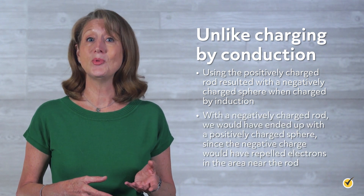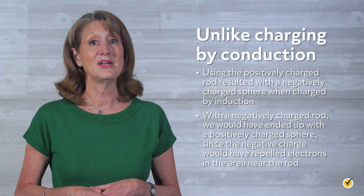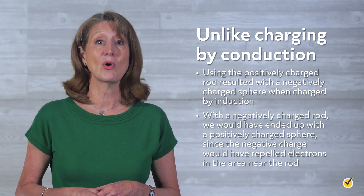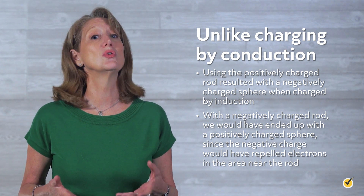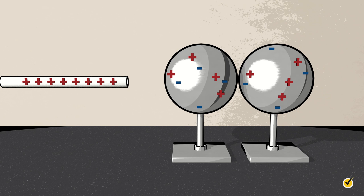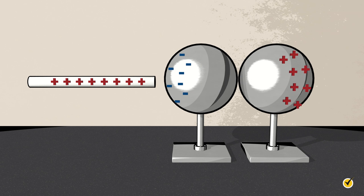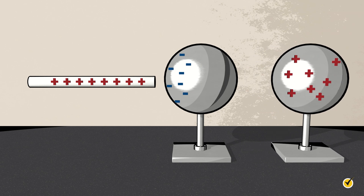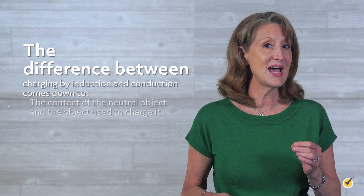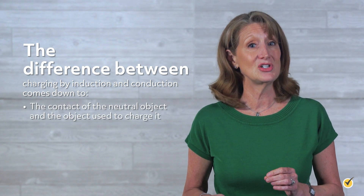With a negatively charged rod, we would have ended up with a positively charged sphere, since the negative charge would have propelled electrons away from the area near the rod. We could also charge by induction without a grounding source. Imagine that we had two neutral spheres touching each other and a positively charged rod. When the positively charged rod comes near — not touching — one of the spheres, an excess of free electrons will move to the sphere that the rod is closest to. Then, moving the two spheres apart leaves us with a negatively charged sphere, the one near the positively charged rod, and a positively charged sphere.